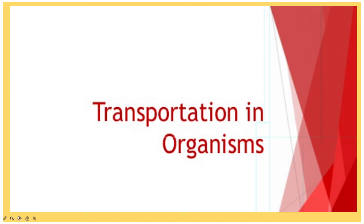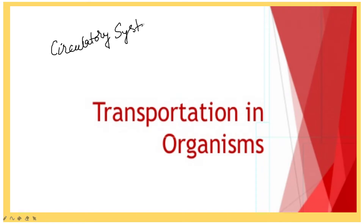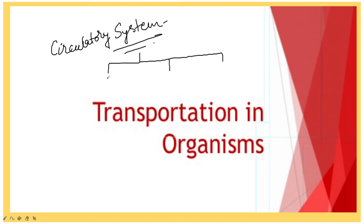In human beings, the rapid supply of all the nutrients, oxygen, and hormones to various tissues and the immediate disposal of waste products is a very important process. The human body has a specialized circulatory system. Transportation in organisms is divided into three different parts, all of which we are going to discuss in detail.